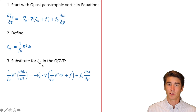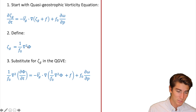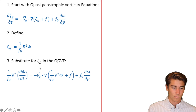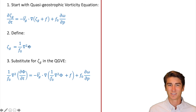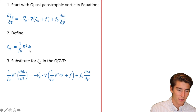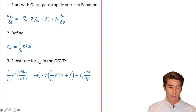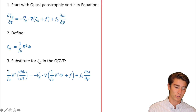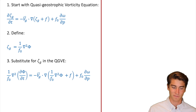We're basically just going to define that as one over f-naught times the Laplacian of phi — that's just what vorticity is. Next, we're going to substitute that in to the quasi-geostrophic vorticity equation, so everywhere you see that vorticity symbol, we substitute in that. When you plug this in to the left-hand side, you see that we kept the phi over dt, and put the Laplacian on the outside, and the one over f-naught with all the constants stays on the left side.